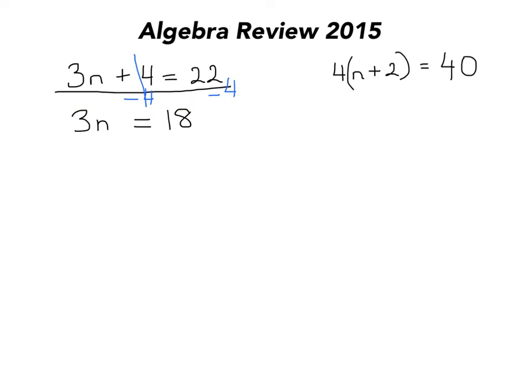Then we have our last bit of baggage, which is the 3 multiplied by n to get 18. How do we get rid of the 3? We do the opposite. Right now 3 is multiplying by n, so we have to divide. Whatever we do on one side of the equal sign, we have to do on the other. The 3s cancel and you're left with n equals 6. So there are two basic steps for isolating the variable — really important to show clearly what you do in each step. I'd even suggest writing a little sentence beside it describing what you're doing.